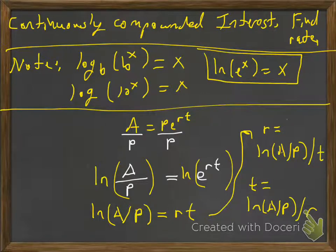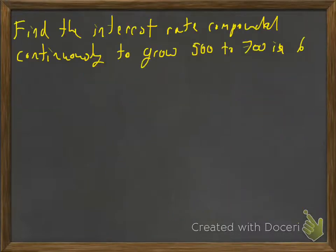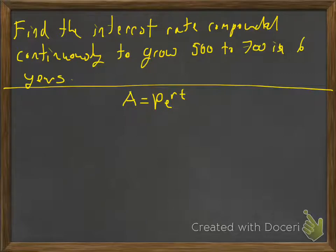All right, so we're going to do an example of finding the rate and also finding the time. So let's find the interest rate compounded continuously—so there's that magic word continuously—so that tells us we're going to use the Pert equation to grow 500 to 700 in six years.